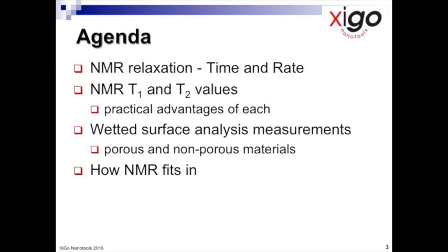In this video, we will continue to discuss NMR relaxation measurements. Our agenda will briefly reprise what is NMR relaxation time and relaxation rate. It will then focus on the two different ways, referred to as the T1 and T2 methods, in which relaxation can be measured. We will look at typical data and discuss the similarities and differences between the methods. We will examine two examples of wetted surface analysis — that for porous and non-porous materials — and conclude with where NMR surface analysis measurements with the Acorn Area fit within the pantheon of traditional instrumentation for particle characterization.